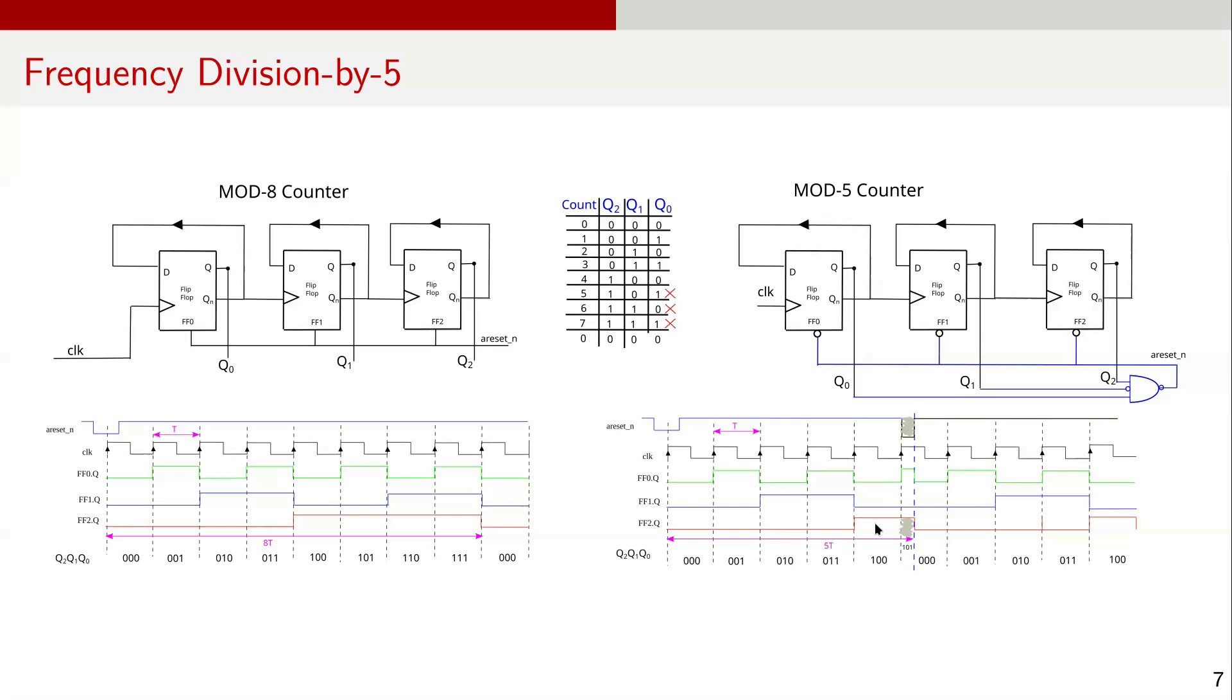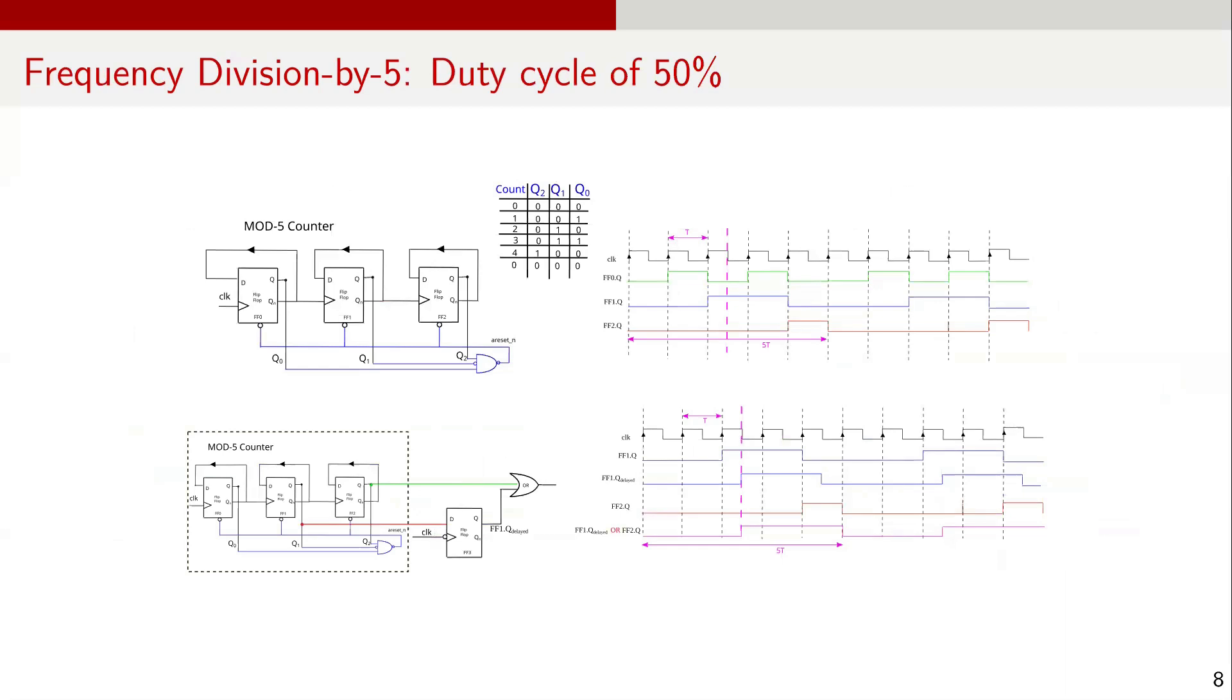Looking at the waveforms, in this design, FF2Q is high for 1 clock cycle out of 5 clock cycles in the time period. So it produces a waveform of frequency f over 5 and a duty cycle of around 20%. Now, let's enhance this to produce a divide by 5 output with a 50% duty cycle.